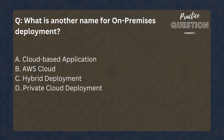What is another name for on-premises deployment? Options: Cloud-based application, AWS Cloud, Hybrid deployment, Private cloud deployment. This was an easy question — it is going to be Private cloud deployment.